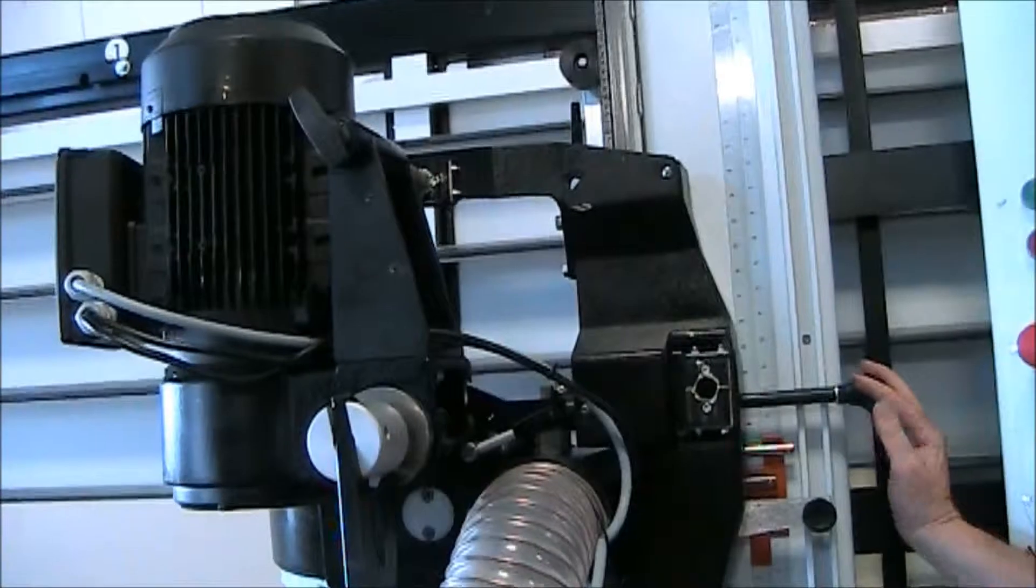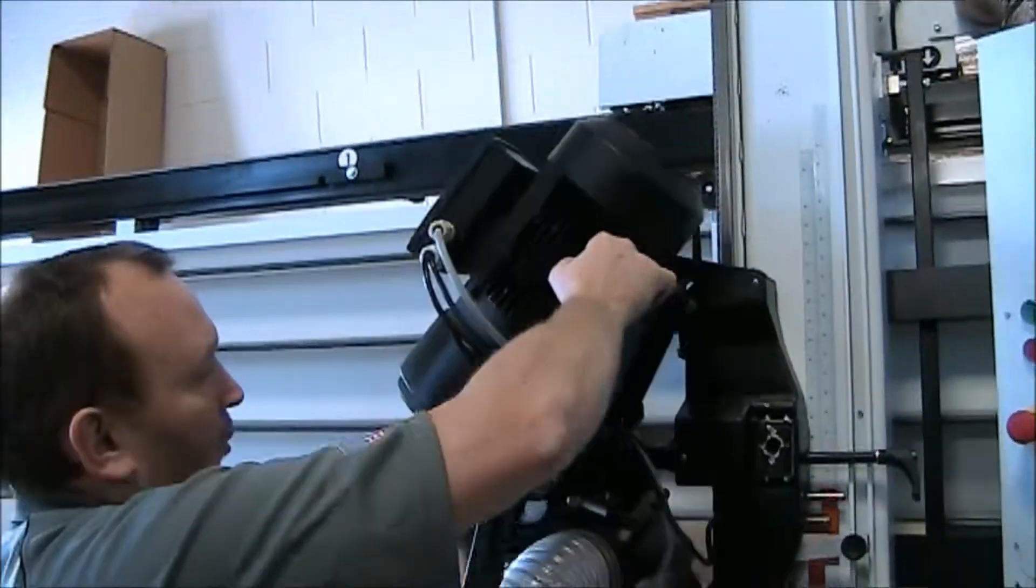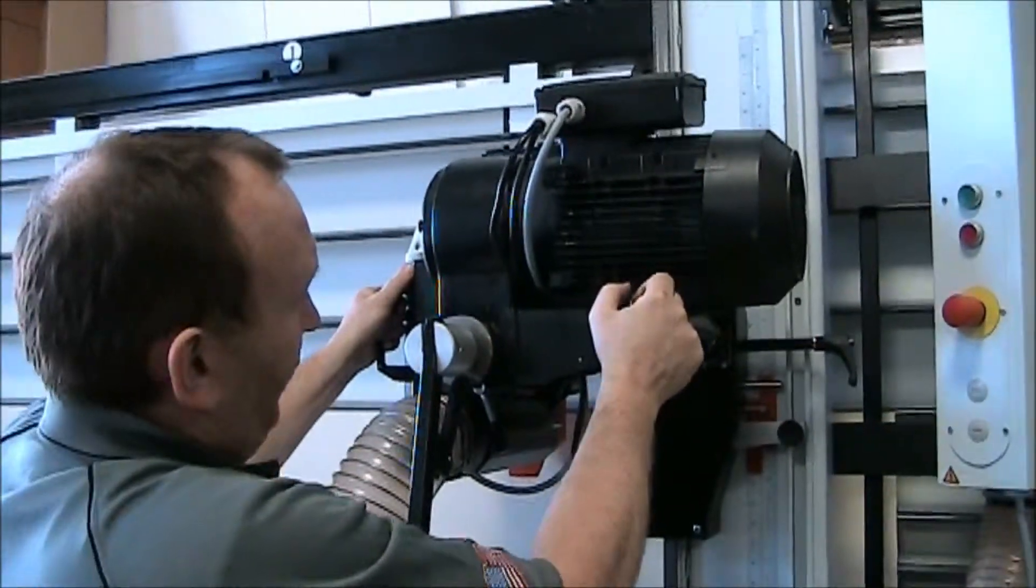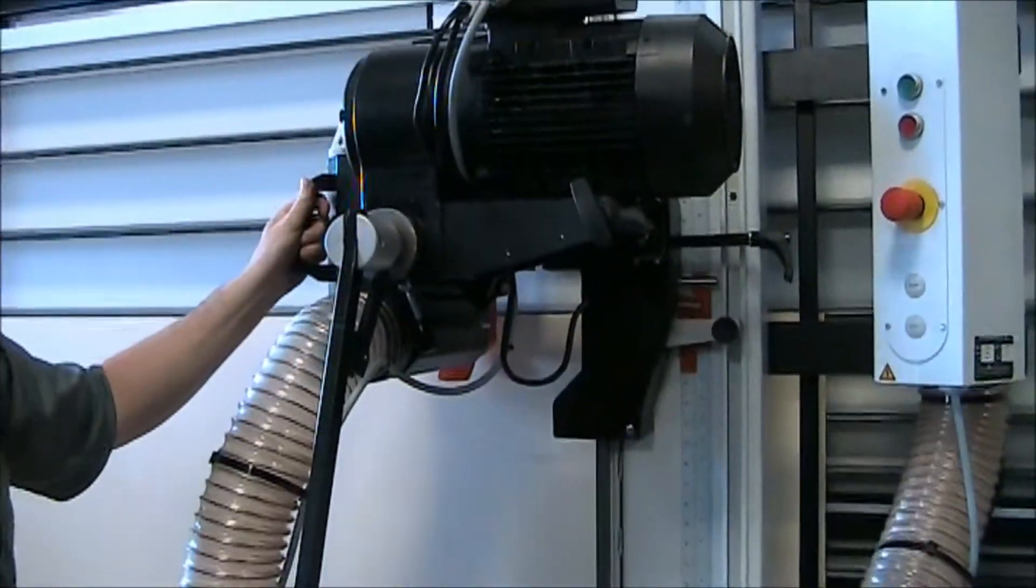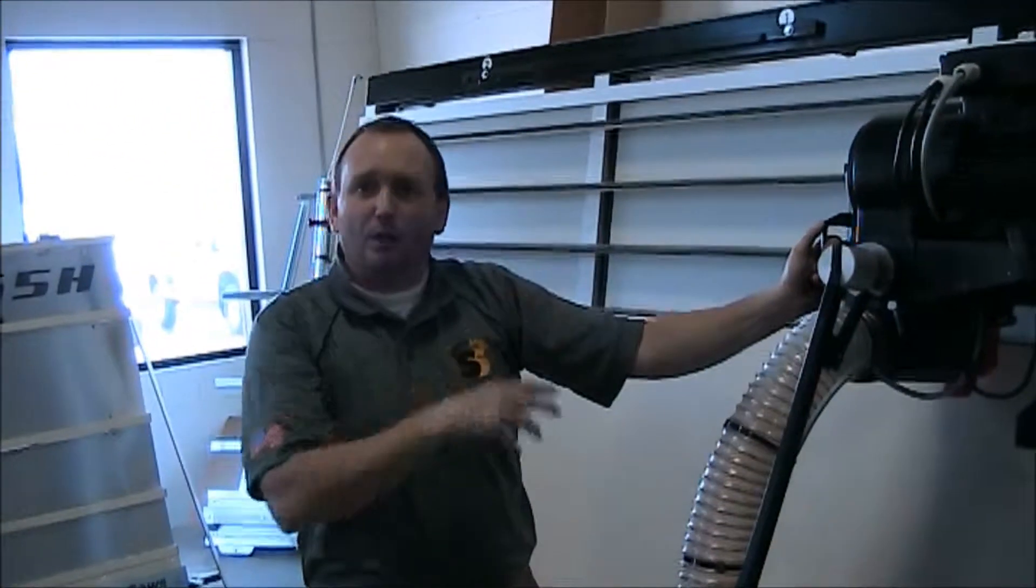I'm just going to rotate this head one more time so you can see that. Again, you've got two different indexing pin holes. Rotate the head, go to vertical positioning. We'll come back here in just a minute to talk about the vertical cutting and some of the ways you can do that.